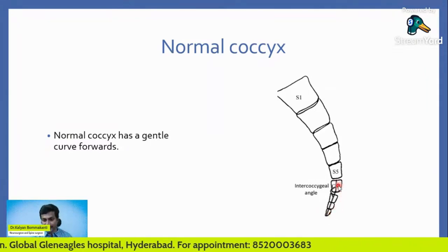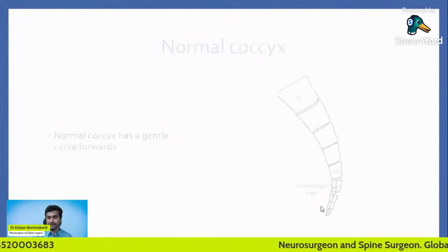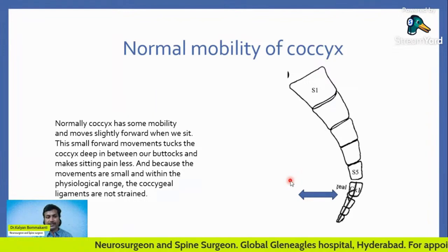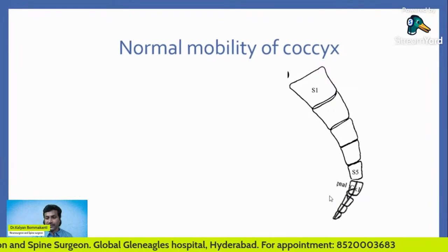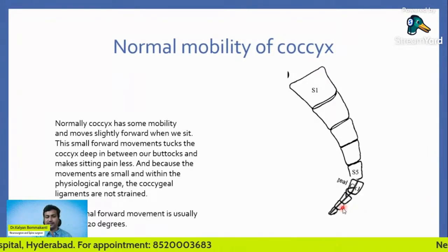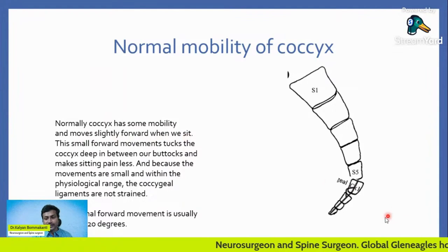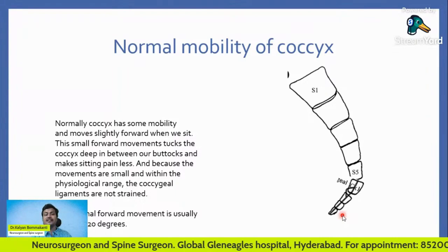The coccyx, or tailbone, is located down between both buttocks. You can observe the normal coccyx as a gentle curve forwards. What is normal mobility of the coccyx? Normally, the coccyx has slight movement and moves slightly forward when you sit. The coccyx was slightly moving forward — this is normal.